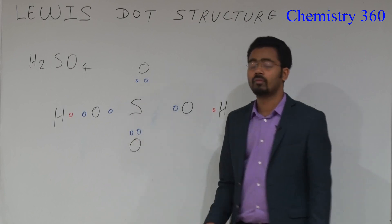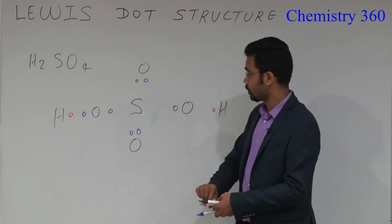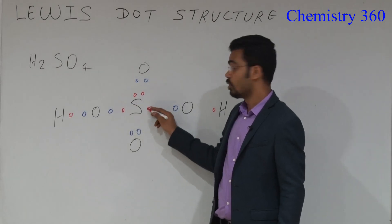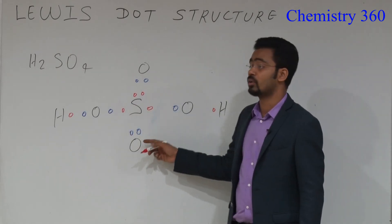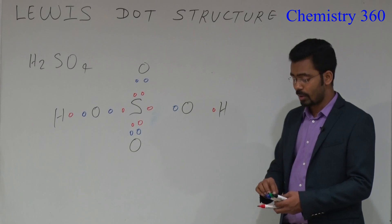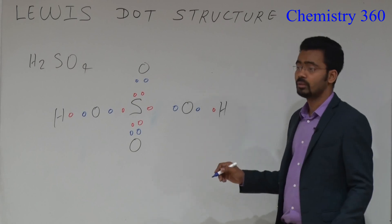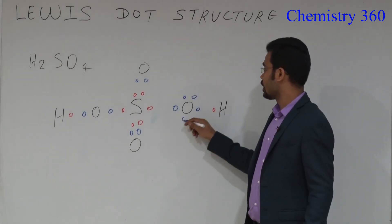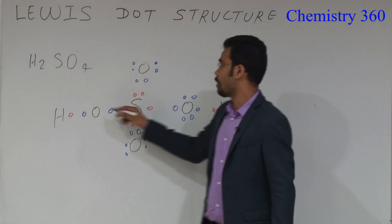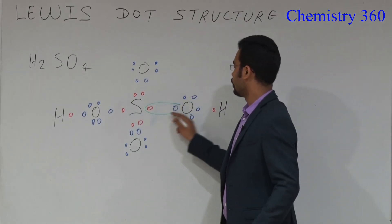Sulfur has 6 valence electrons. Check for sulfur: 2 electrons here, 1 electron here, 1 electron here. Since oxygen here forms 2 electrons, sulfur has to share 2 electrons. Now draw the lone pairs. Oxygen has 6 valence electrons, so the lone pair of oxygen is always 2.